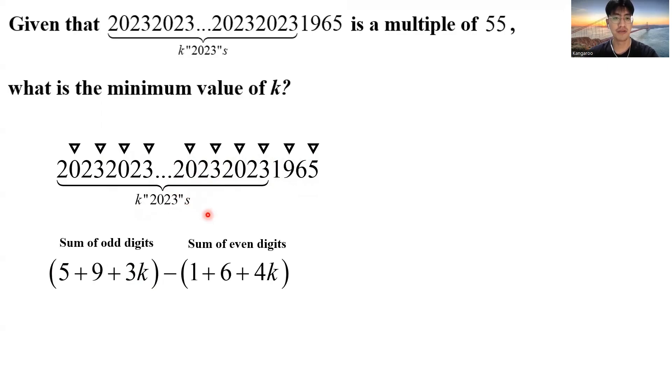Minus the sum of even digits, which is 1 plus 6 plus 4k, because for each 2, 0, 23, I get 2, 2, which is 4. What is the result of this calculation? This is just 7 minus k. Therefore, if this number is a multiple of 11, this thing right here must also be a multiple of 11. Let me remind you that 0 is also a multiple of 11. So the minimum value that I can put here for k is 7. So the final answer to this problem is just 7.